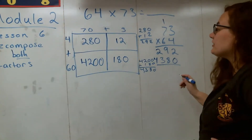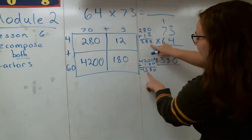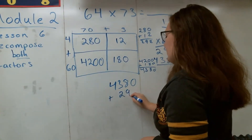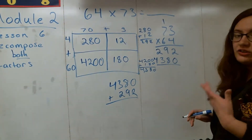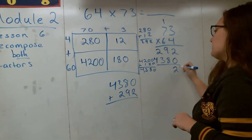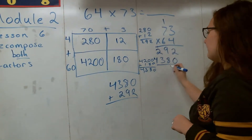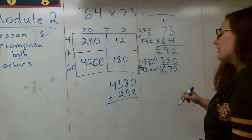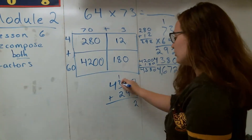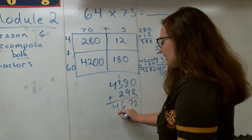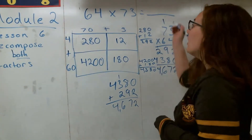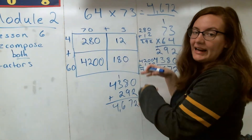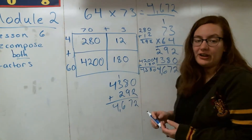I can now add up the two partial products. So 4,380 plus 292: 2 plus 0 is 2, 9 plus 8 gives me 17, carry the 1. 2 plus 3 is 5 plus 1 is 6. And 4 plus nothing is just 4. So I have 4,672 as my final answer. The reason why we did these bigger area models is so we could break this problem down into easier parts that are simpler for us to solve.